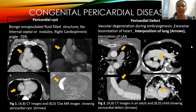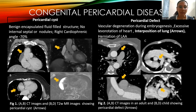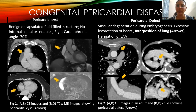Congenital pericardial diseases: First is pericardial cyst — a benign encapsulated fluid-filled structure with no internal septations or nodules, as shown in the image. Second is the pericardial defect, caused by vascular degeneration during embryogenesis, excessive rotation of the heart, interposition of lungs shown by arrows, and possible herniation of heart chambers such as the left atrial appendage.